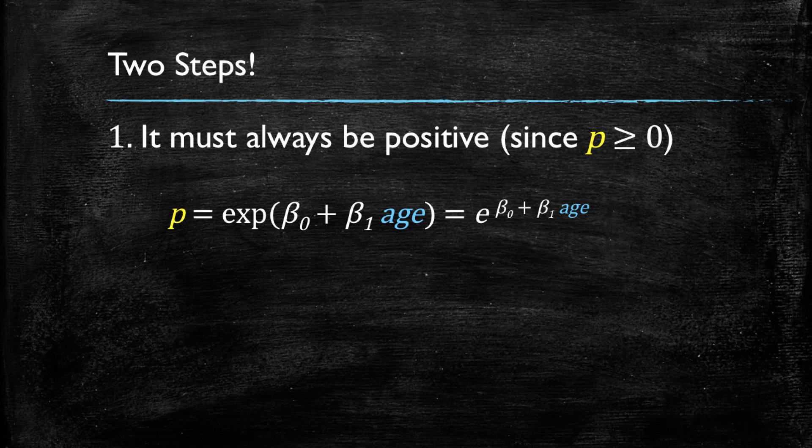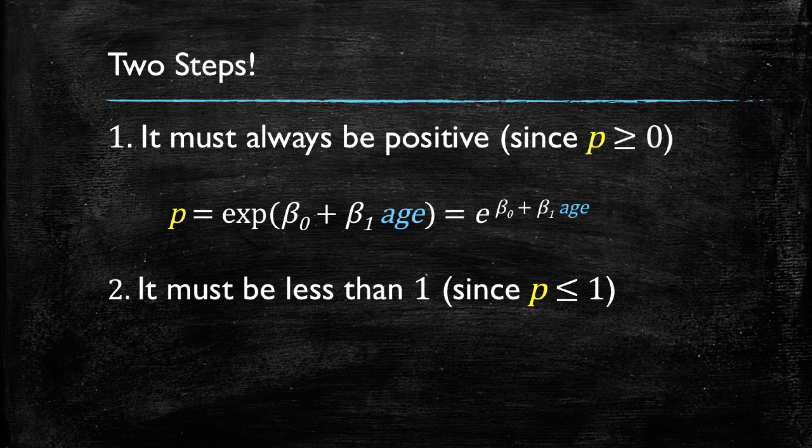However, it sometimes will be greater than 1. So we need something else to satisfy the second criteria, that the probability is less or equal than 1.